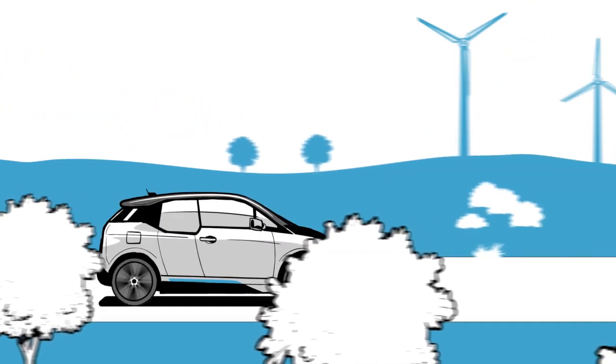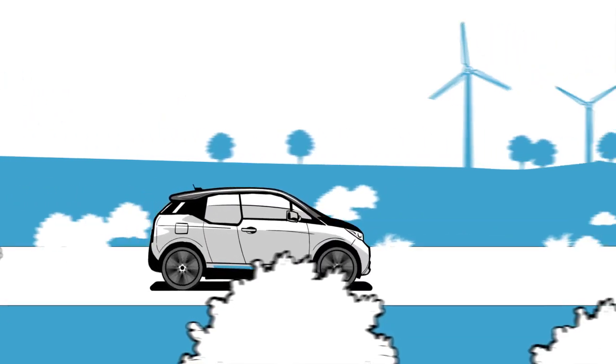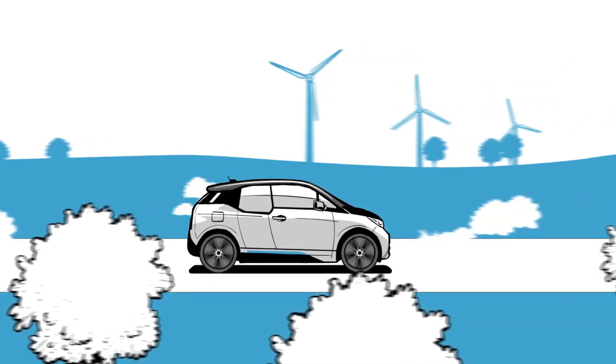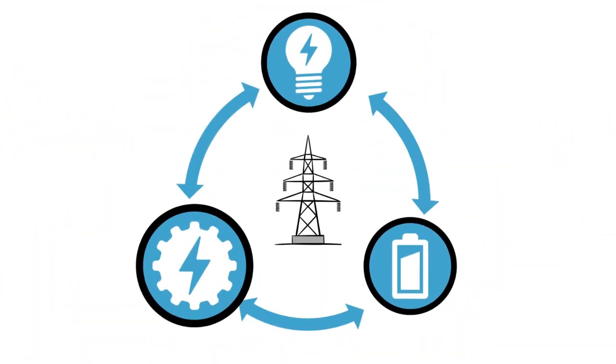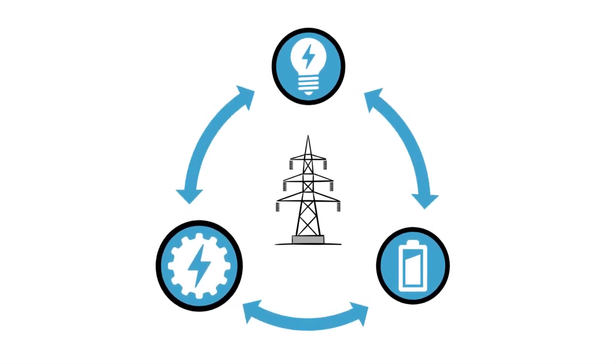This also benefits electric mobility. With networking and intelligent control, the BMW Group thus contributes to reducing network expansion and maintaining lower energy prices. That's because the BMW Group views electric mobility as a whole far beyond the construction of electric vehicles.